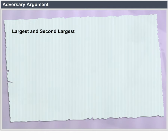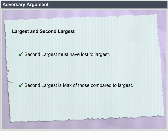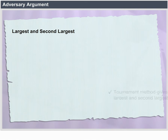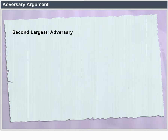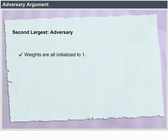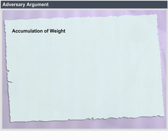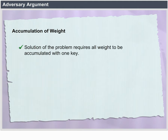Largest and second largest: the second largest must have lost to the largest. The second largest is the max of those compared to the largest. The tournament method gives N − 1 + log N comparisons for finding the largest and second largest. For the second largest adversary, all keys are assigned weights W(i), all initialized to 1, and adversary replies are based on weights.